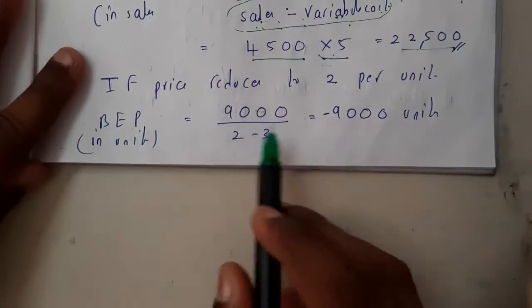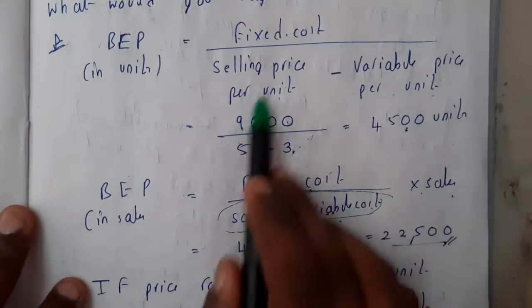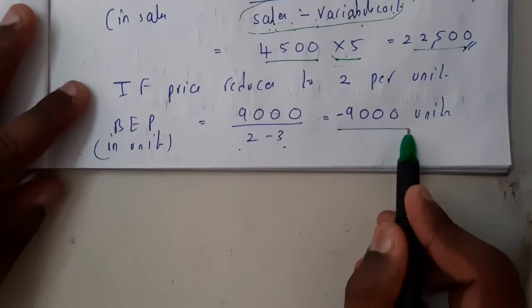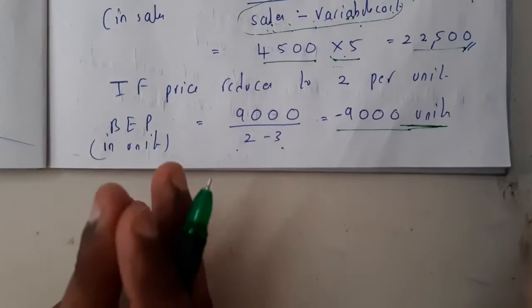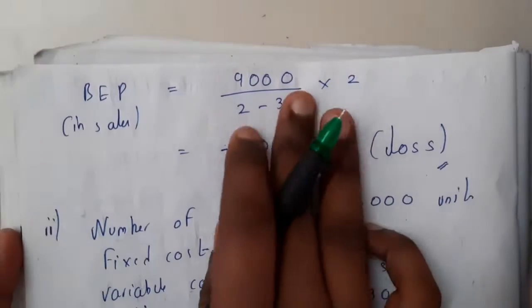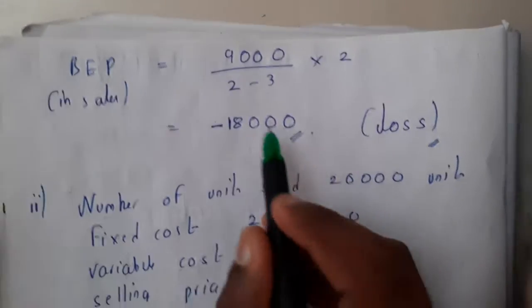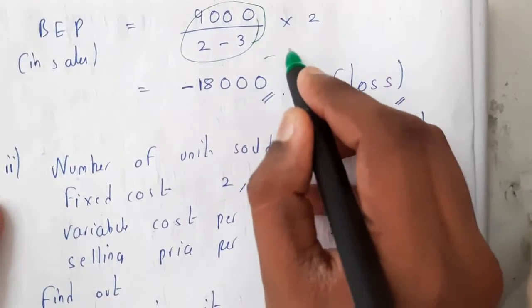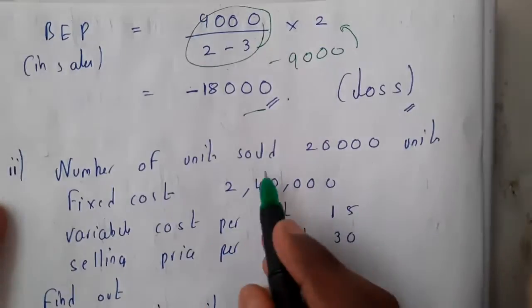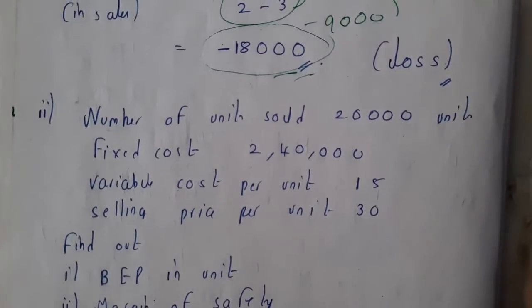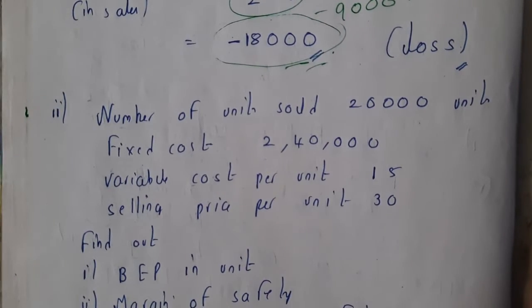Now with the selling price reduced to 2, BEP in units = 9,000 divided by (2 minus 3) = minus 9,000 units — meaning you are losing 9,000 units, which indicates a loss. Similarly in terms of sales value: minus 9,000 multiplied by 2 = minus 18,000. So using this you can see it results in a loss.